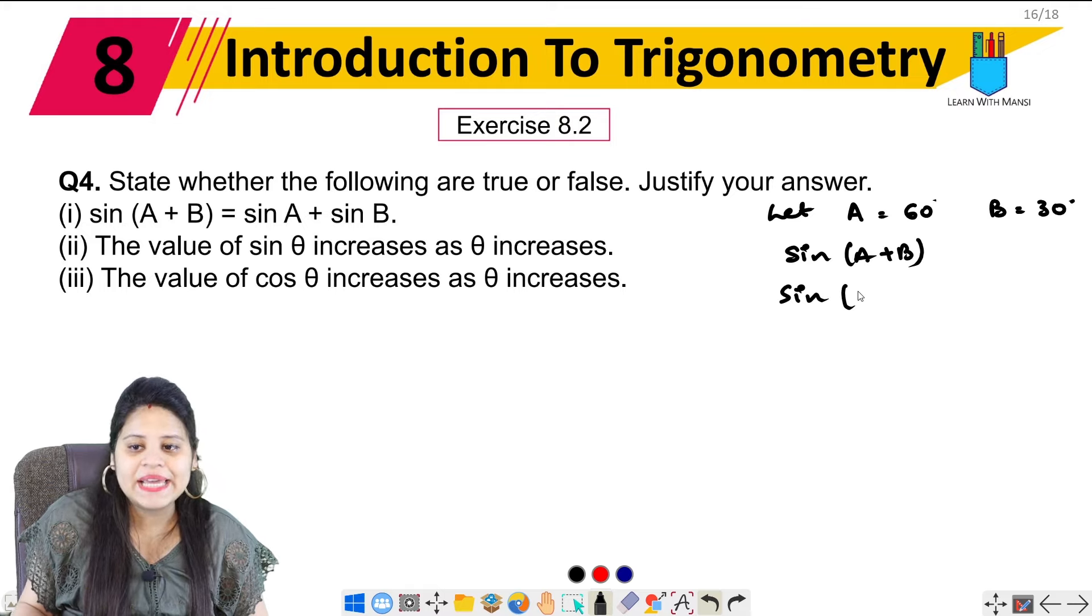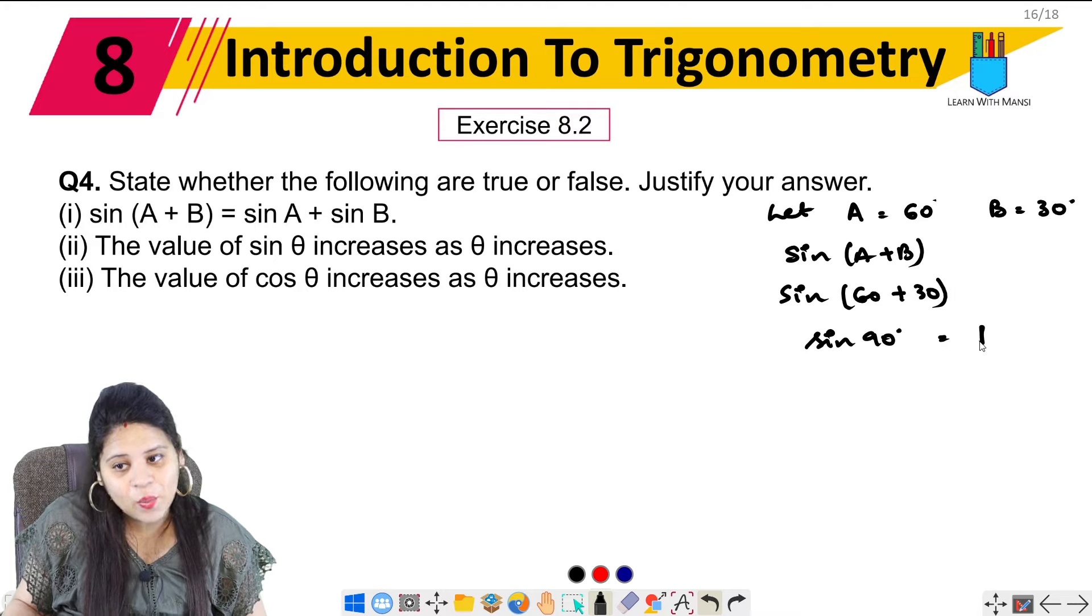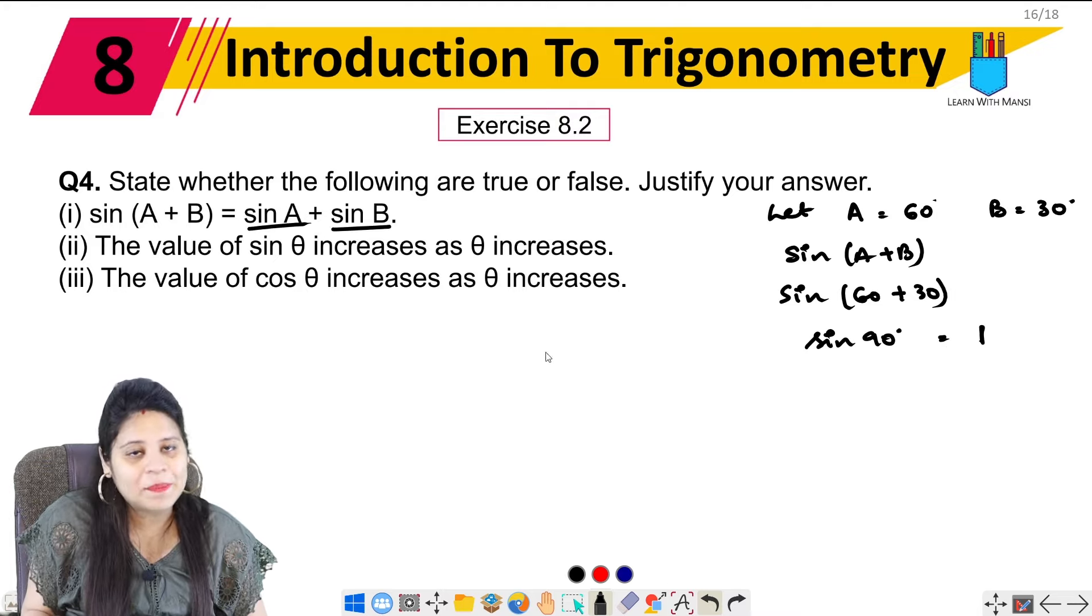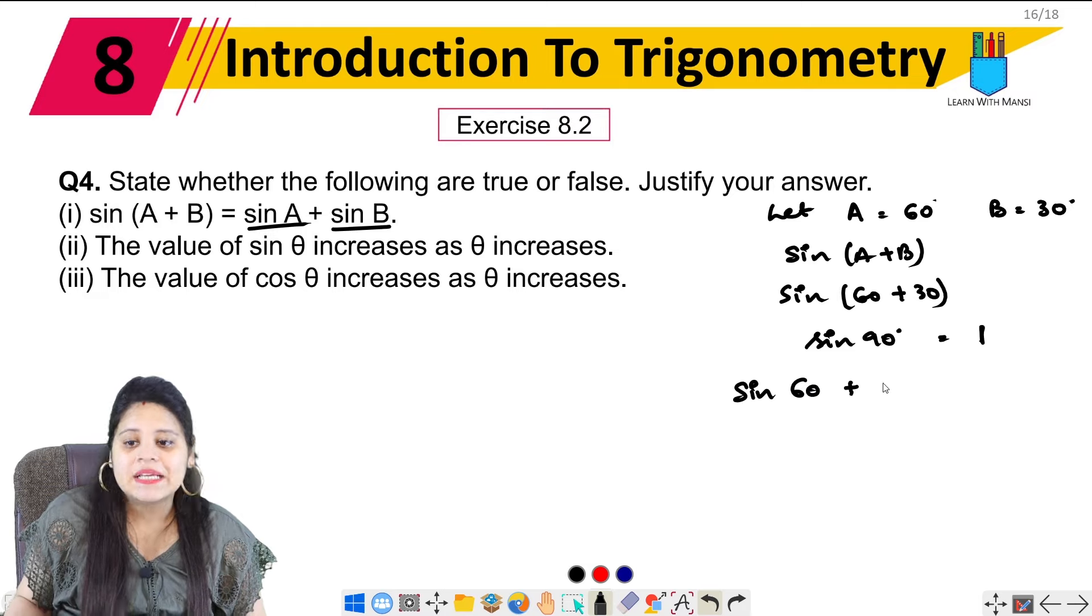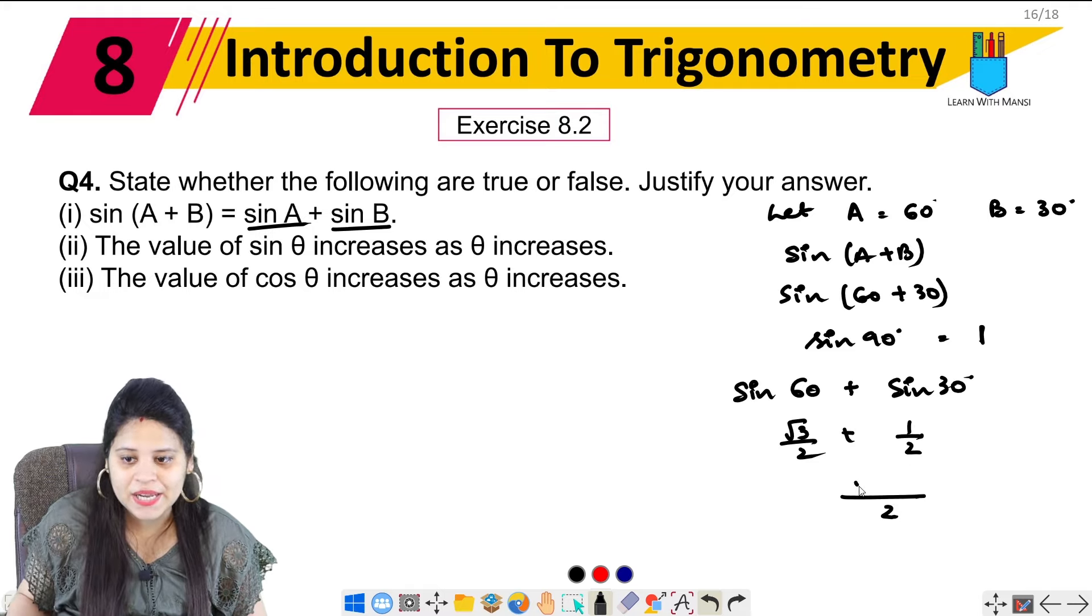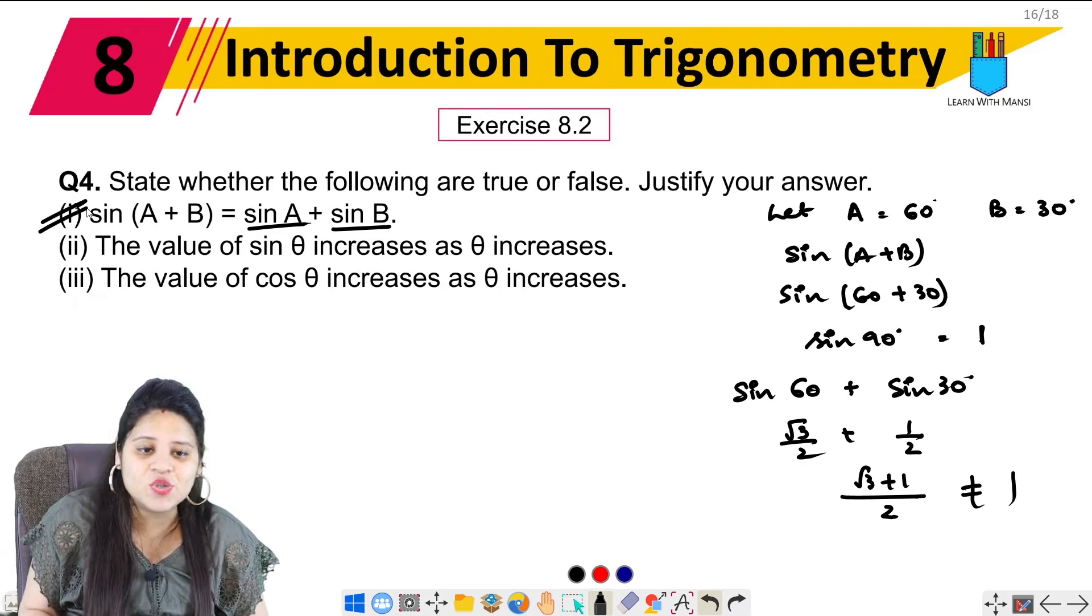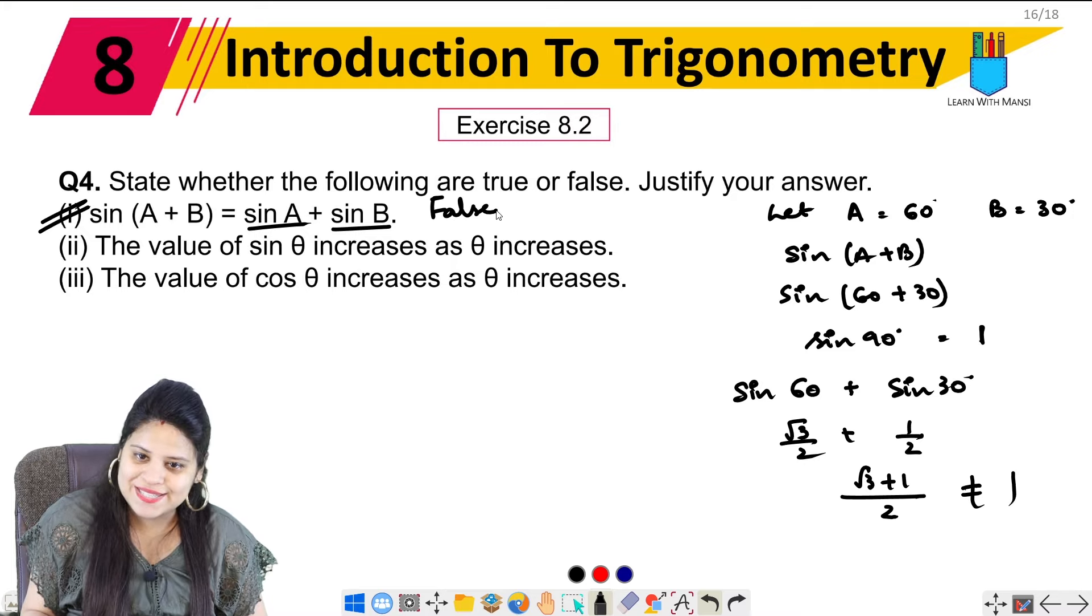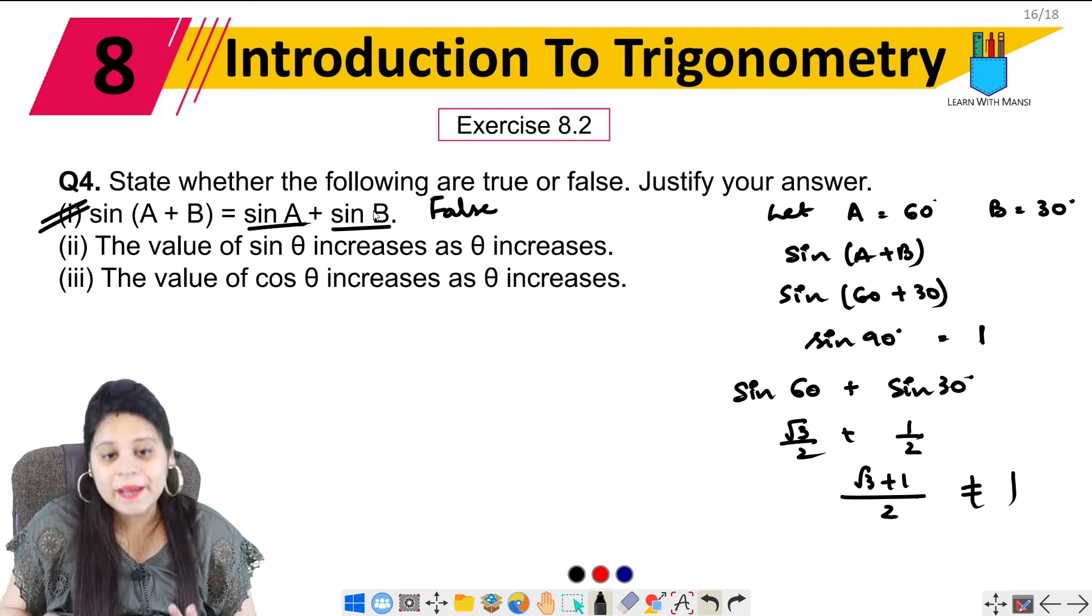We have sin(60 + 30), so this is sin 90 degrees, which equals 1. Now if we talk about sin A + sin B, that should also be 1, so let's check. Sin 60 is root 3 upon 2, plus sin 30 is 1 upon 2. Taking LCM, we get (root 3 + 1) upon 2. So this is not equal to 1. From here we see that this statement is false.